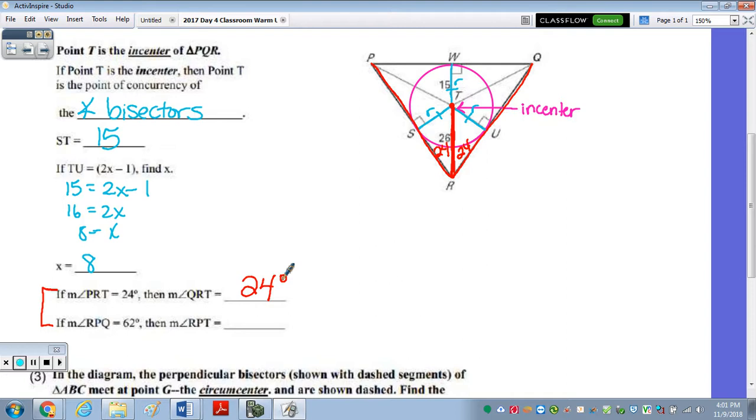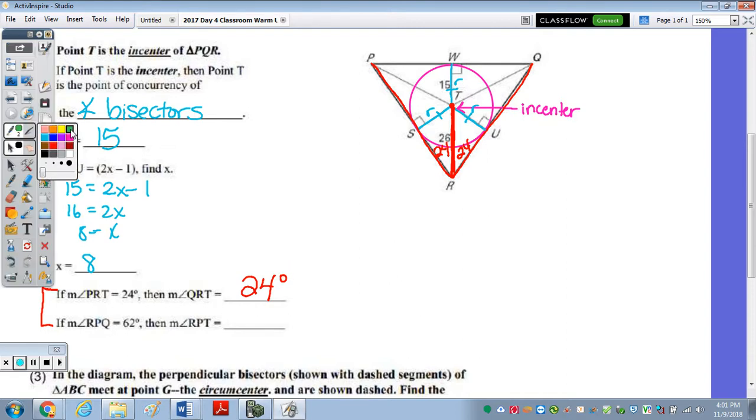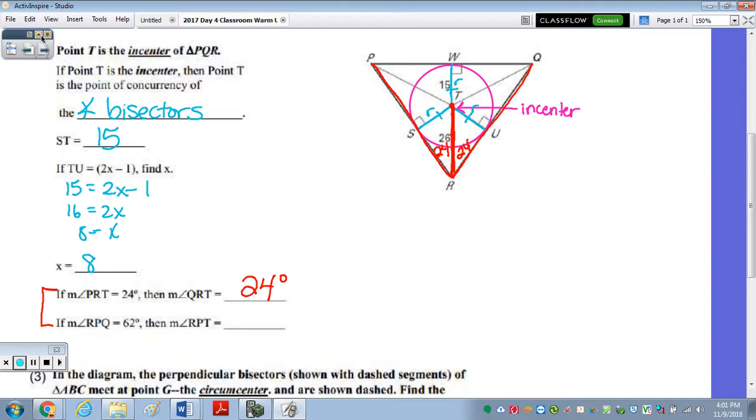And then now, let me grab a different color. We're going to look at the last part, which says that RPQ, so RPQ, this whole angle is 62 degrees. And we need to find the measure of RPT, which is this half, because PT is an angle bisector, which is going to divide it into two congruent angles. And 62 divided by 2 is 31 degrees.